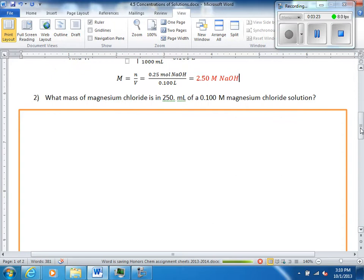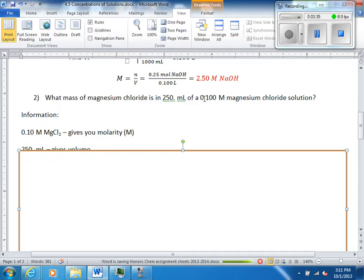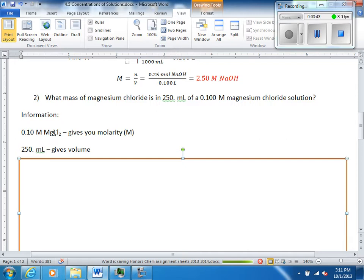Next question. What mass of magnesium chloride is in blah-dee-da? Okay. Identify what's given. So, what information do we have? We have that 250 mils, which is a volume. I first wrote down the molarity. You could do it in either order. So, I have two numbers here. You have to identify what each number is. This is the molarity. And that's MgCl2. You should be able to figure that out on your own. This right here, you should recognize milliliters. That gives us a volume.